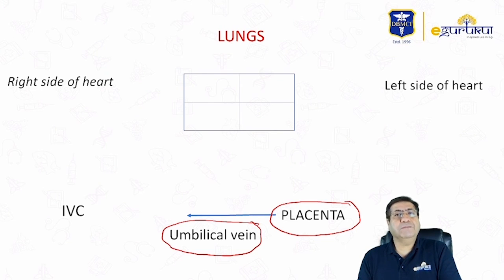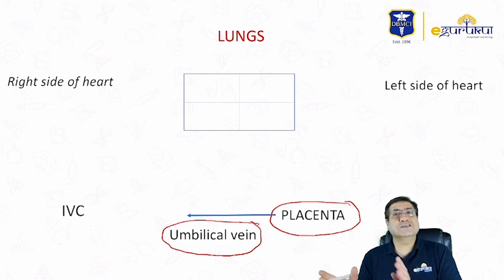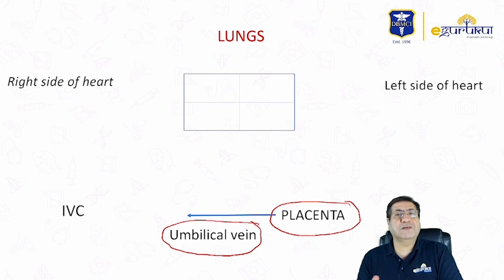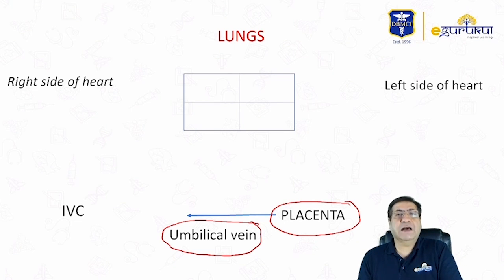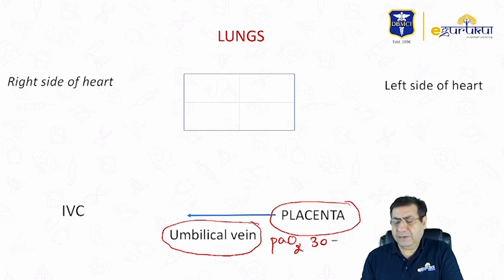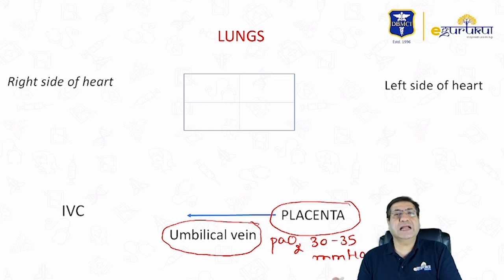Although the placenta performs the function of gas exchange in the fetal circulation, it is not as competent as the lungs. Therefore, it cannot provide very high partial pressures of oxygen. The PaO2 values in the umbilical vein remain relatively low, between 30 to 35 mmHg, which is quite low considering the blood is coming directly from the site of gas exchange.